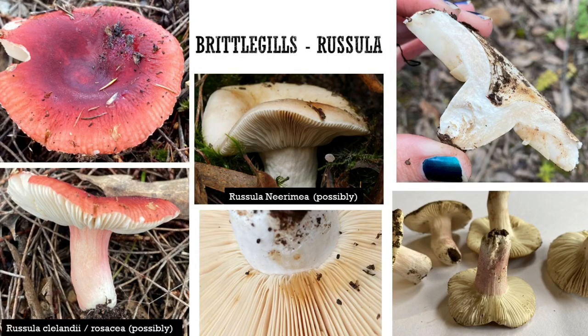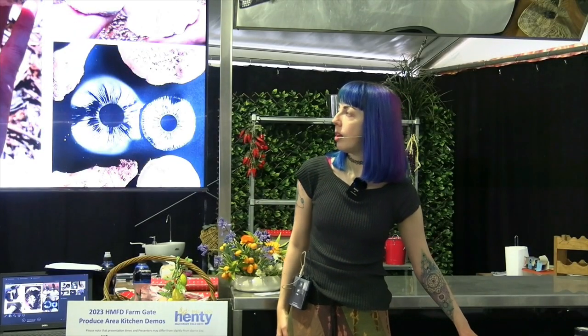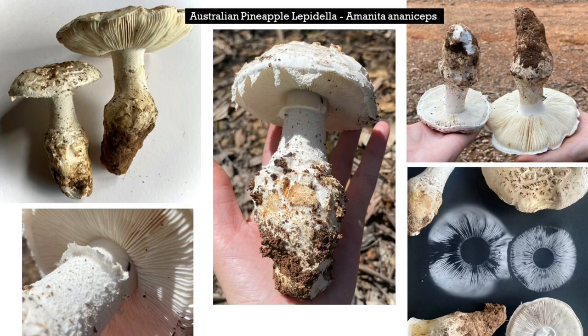Russula, also called brittle gills, has a chalky, crumbly texture. Some are edible but I wouldn't recommend them for beginners as some are toxic as well. One of my favourite mushrooms — very impressive — has remnants of the partial veil hanging on the edge, smells quite acrid, has a beautiful scalloped grid, and a very large, chunky basal bowl. It's a native one as well.